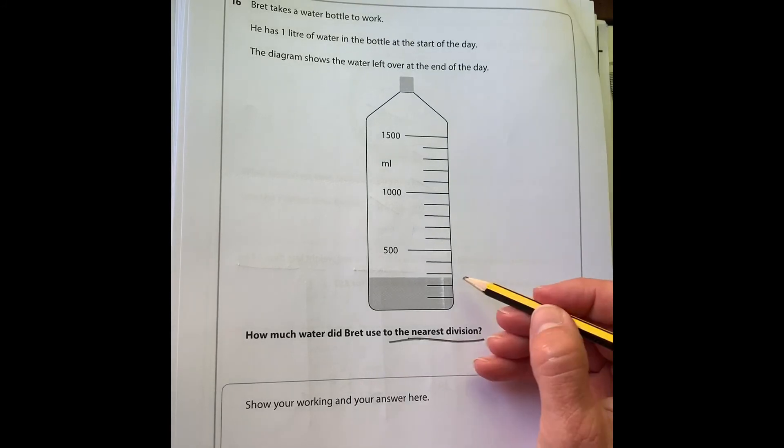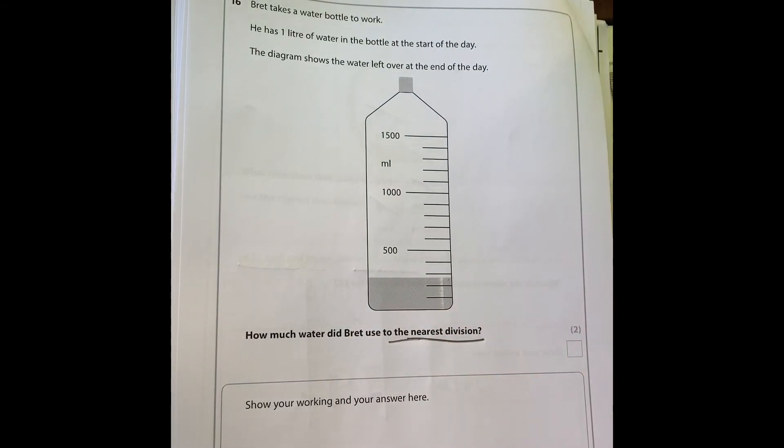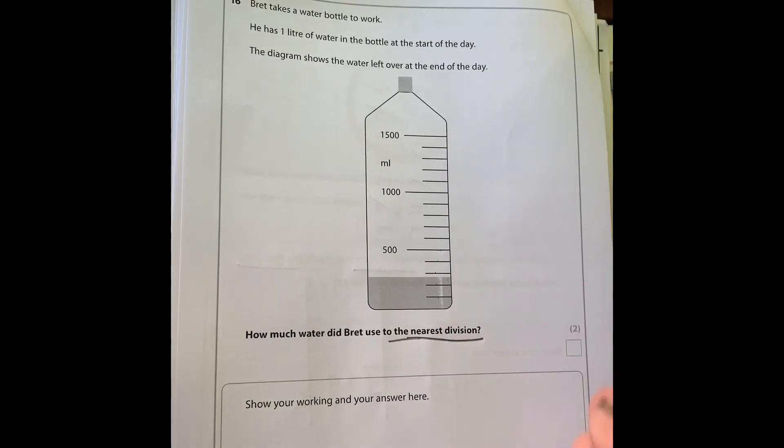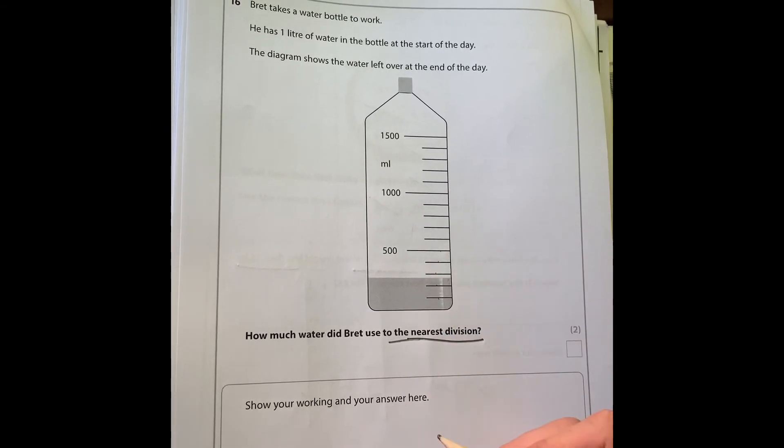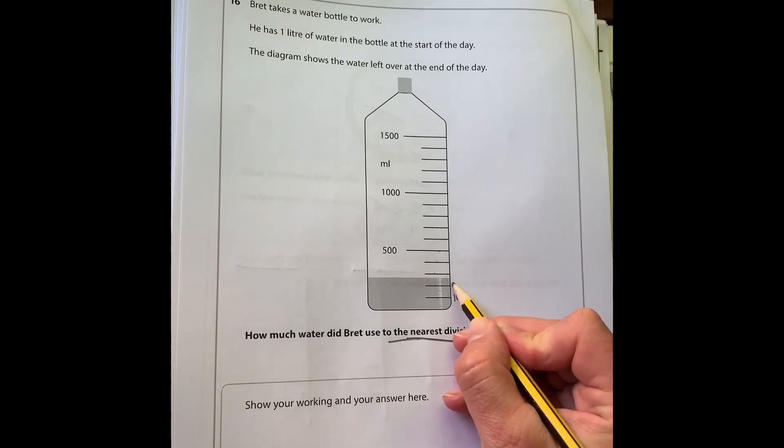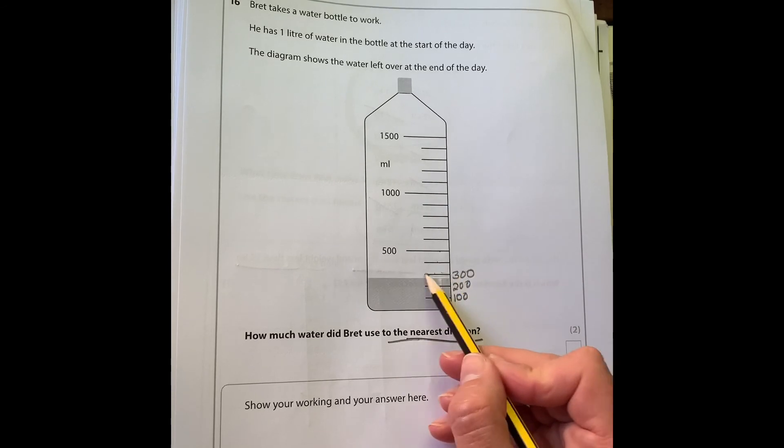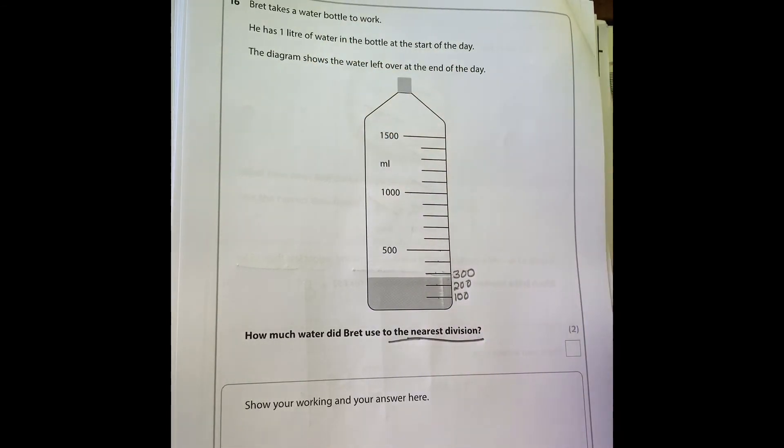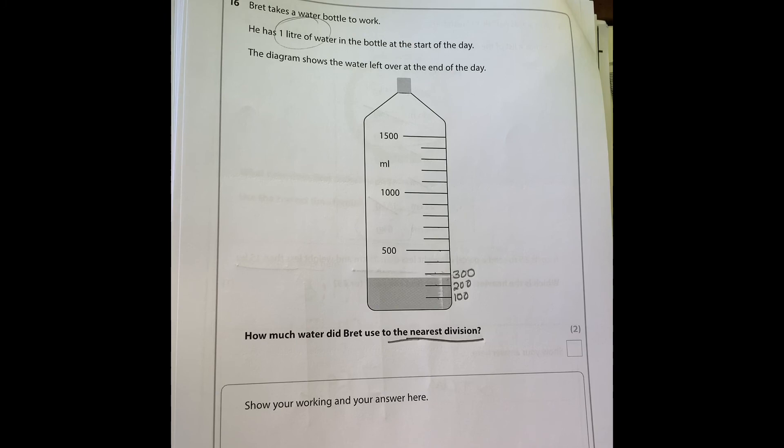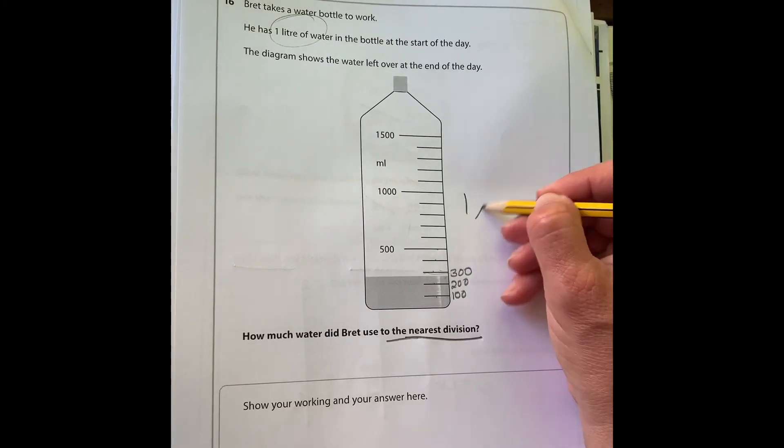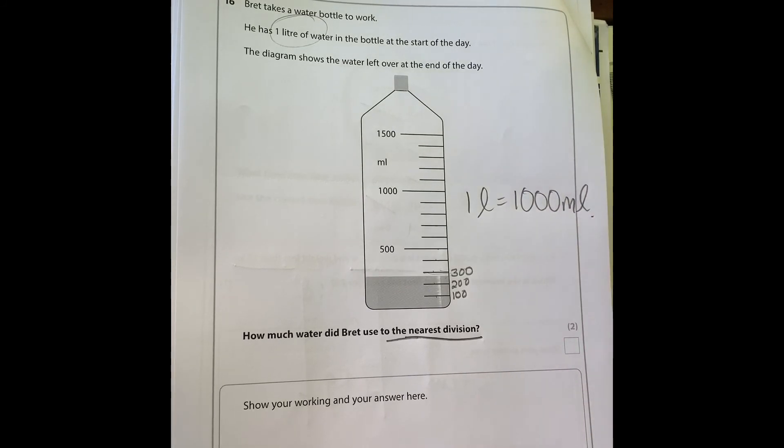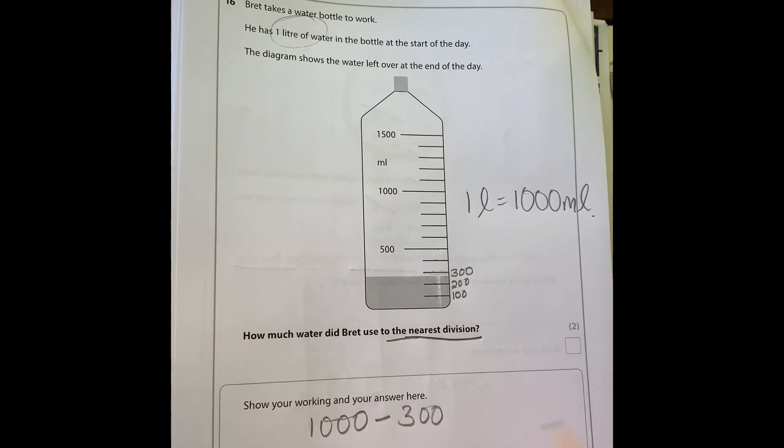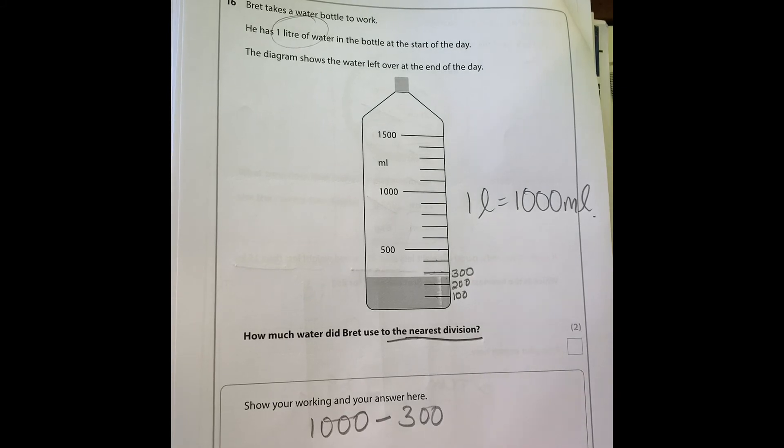So to the nearest division, 300 is how much is left. He had a liter at the beginning of the day, so we need to know our conversions, but one liter is 1000 milliliters. If we started off with a thousand and we are left with roughly 300, the amount used to the nearest division is 700.